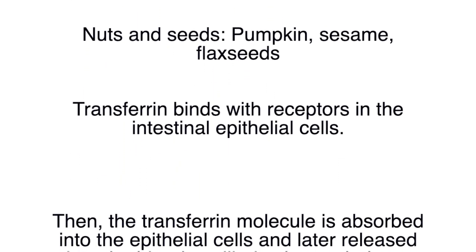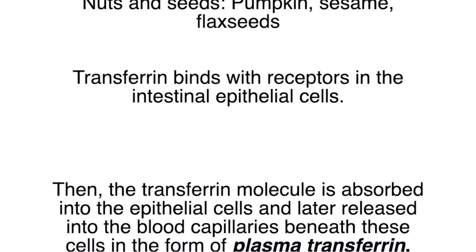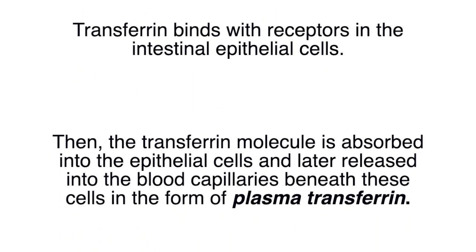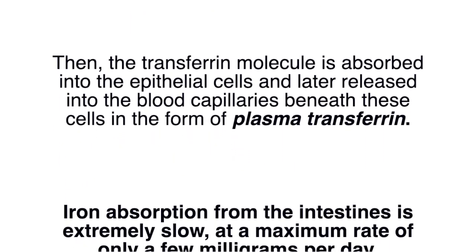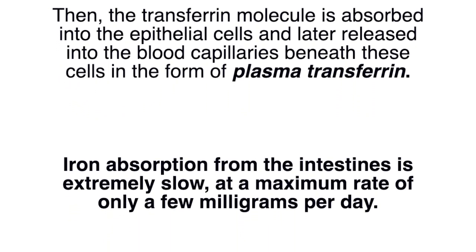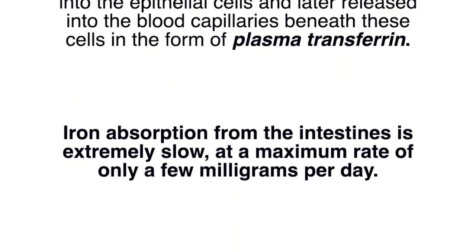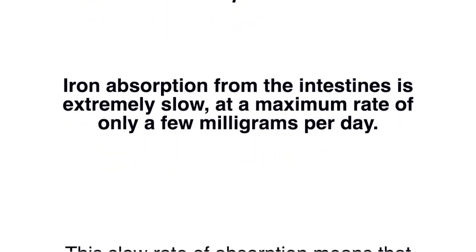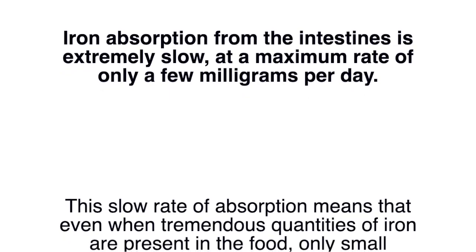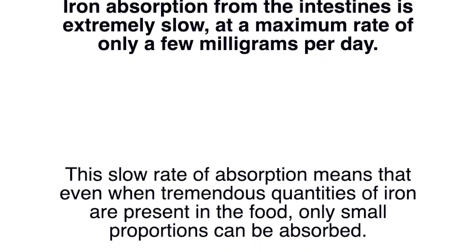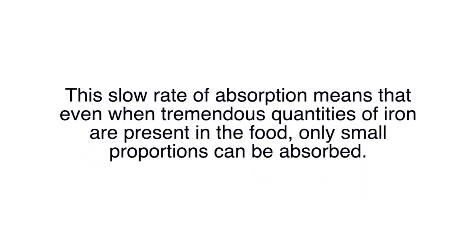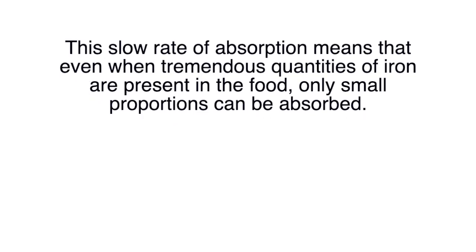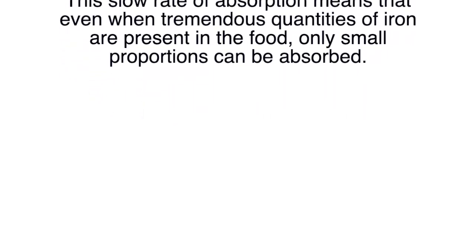Transferrin binds with receptors in the intestinal epithelial cells, and then the transferrin molecule is absorbed into the epithelial cells and later released into the blood capillaries beneath the cells as plasma transferrin. Iron absorption from the intestines is extremely slow, at a maximum rate of only a few milligrams per day, meaning that even when tremendous quantities of iron are present in food, only small portions can be absorbed.